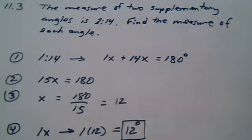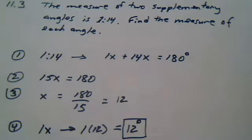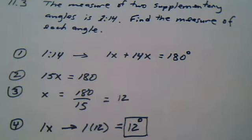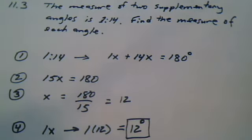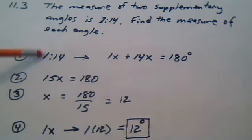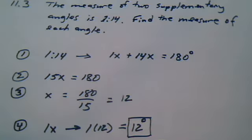The measure of two supplementary angles is 1 to 14. Find the measure of each angle. So each of these numbers represents one of the angles.